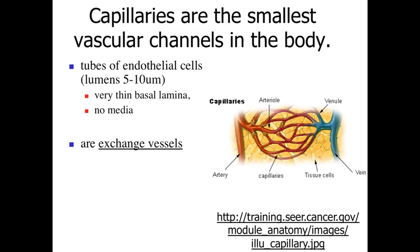We want to keep these capillaries essentially closed — a closed circulatory system — but maximize the potential for exchange to occur. The lumen diameter of a capillary is about five to ten micrometers, while a red blood cell is usually about six and a half to seven micrometers in diameter. So red blood cells have to line up single file to pass through, slowing them down and allowing for maximum diffusion and exchange.